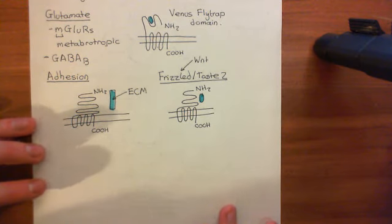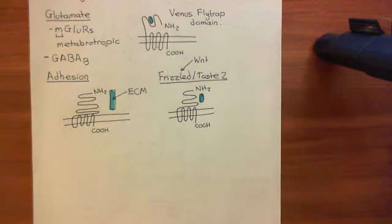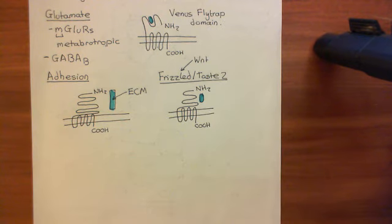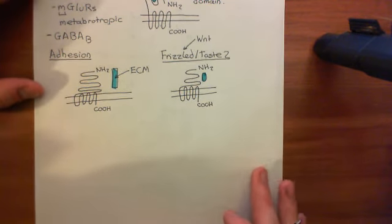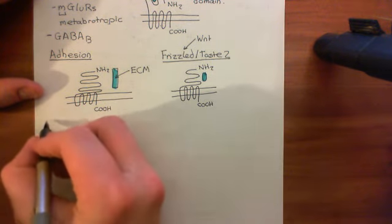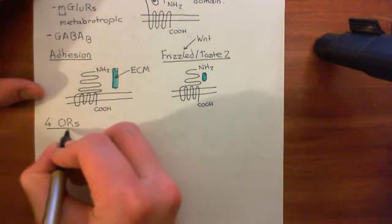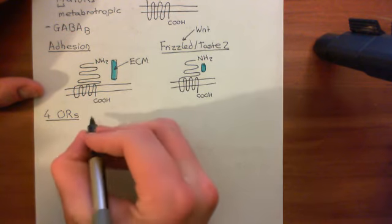That's a brief whirlwind tour of the different families of G-protein coupled receptors. It's the rhodopsin family that we are interested in for opioid receptors — all four opioid receptors are within the rhodopsin family, which means they bind their ligand within the transmembrane domain portion. There are four opioid receptors, abbreviated as ORs.